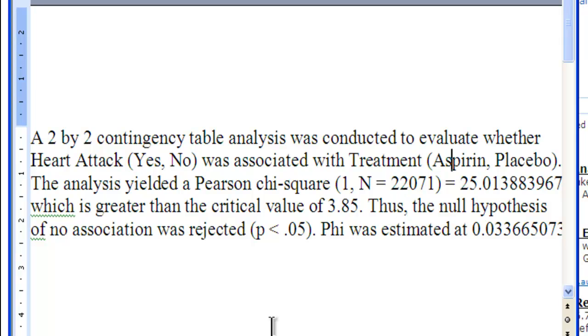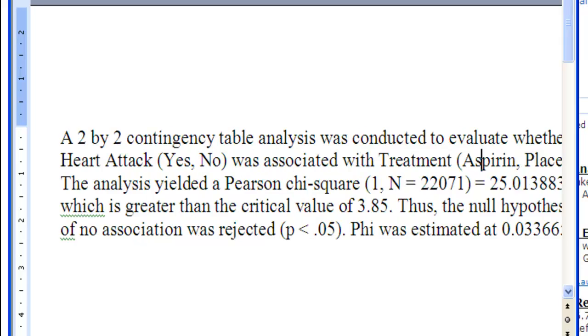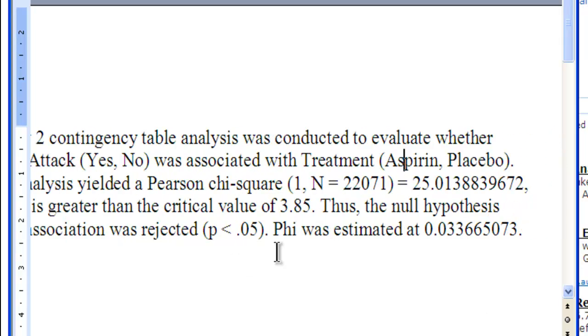So I'm assuming that you're using an alpha level of 0.05, which is almost always the case. So thus, the null hypothesis of no association was rejected, p less than 0.05. Phi was estimated at 0.03363. Again, you probably only report that to two decimal places.